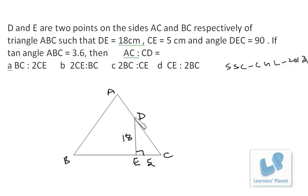Now we have to find the ratio AC to CD. That means we need to draw one more line over here that will be parallel to line DE. So this is also 90 degrees.